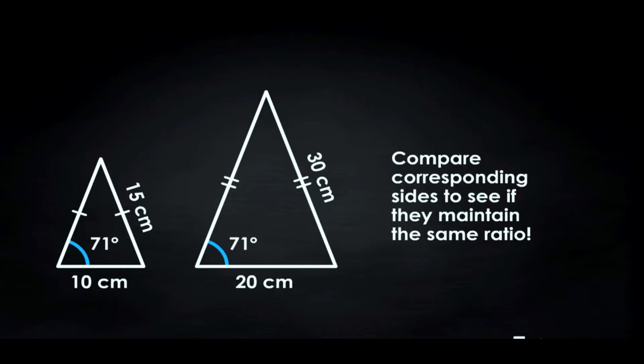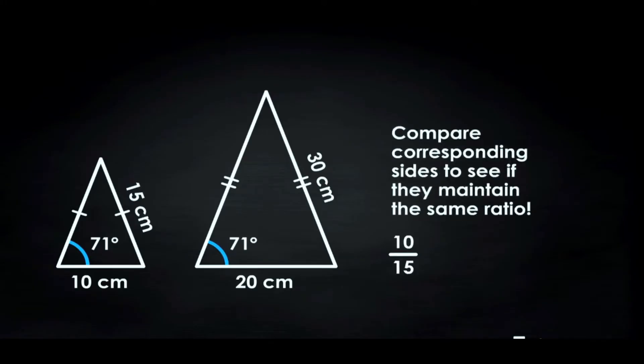Are these ratios the same? 10 by 15 equals 20 by 30. Both of these fractions simplify down to 2 by 3. So the answer is yes. The proportions of the two isosceles triangles are the same, so the two triangles are similar.